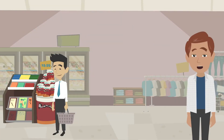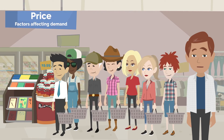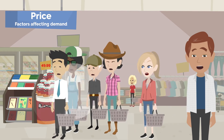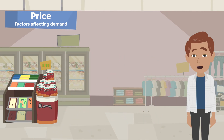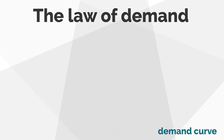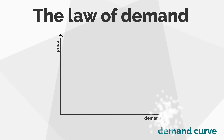What dictates how high the demand is? One basic factor is undoubtedly the price. The more expensive a given product is, the lower the demand for it. On the other hand, if a given good or service becomes cheaper, more customers want to buy it, so the demand grows. This relationship is called the law of demand and is represented by the so-called demand curve.